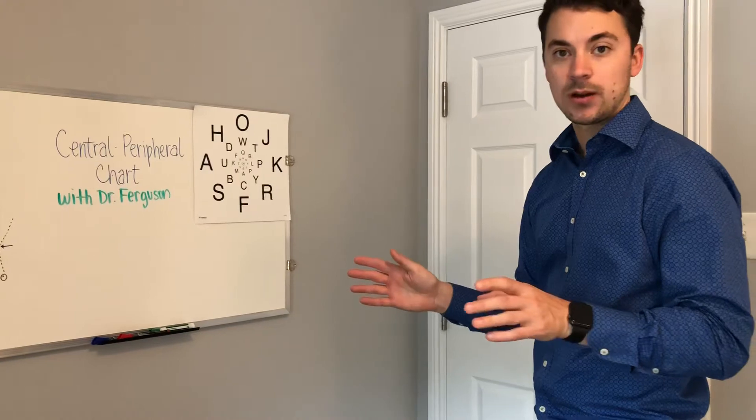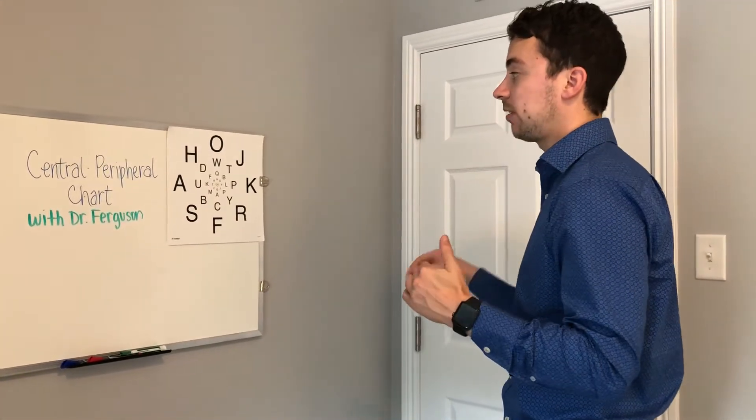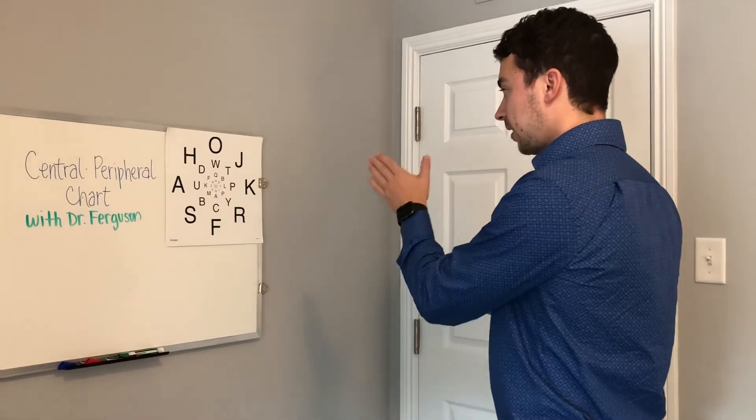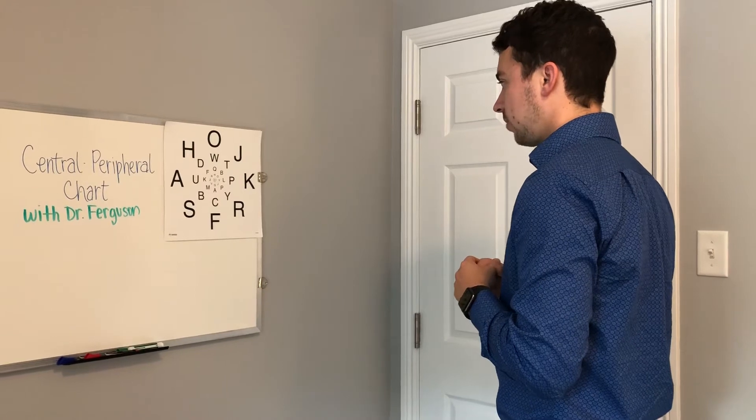That's the most important part because you're going to use your peripheral vision, so your side vision, to read out all the letters. You're going to start by looking at the middle dot and then use your side vision to read out the letters.